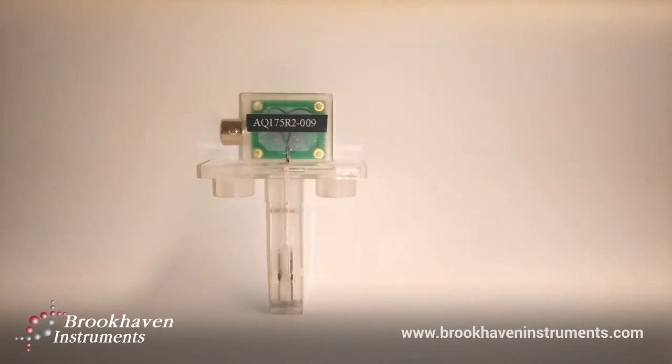This electrode is perfect for measuring the zeta potential of precious samples, as it only requires 175 microliters of dilute sample. This electrode can also measure high salinity samples with ease.